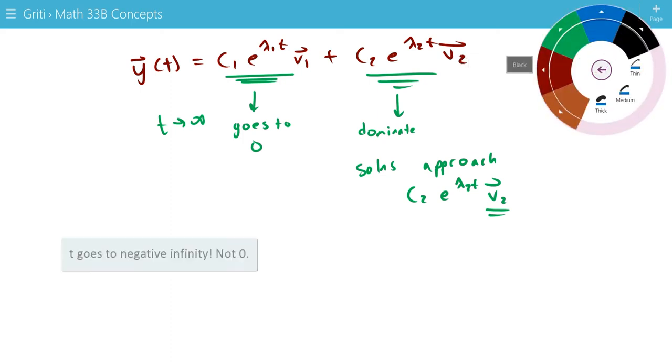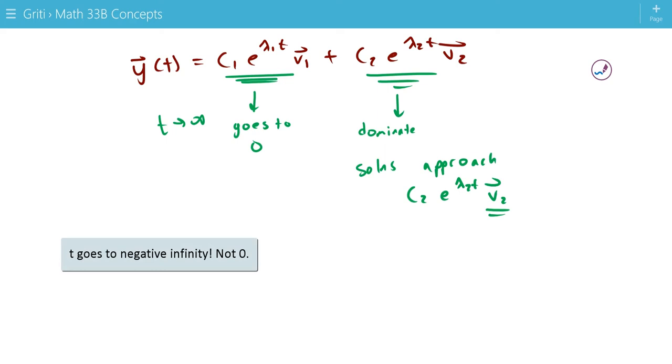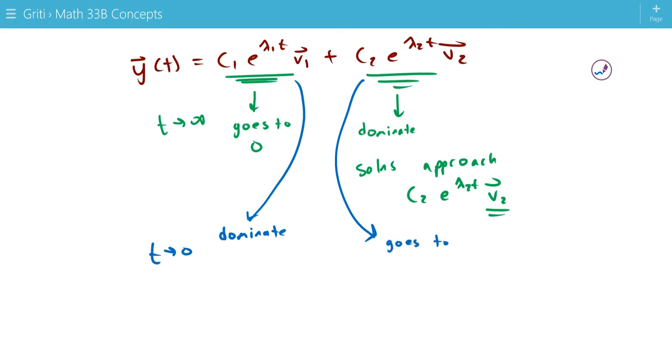Then we can consider the other case, where t goes to negative infinity. When t goes to negative infinity, this part, since it's a negative exponential, this will dominate. It will get larger and larger as we get to smaller values, and this will actually go to 0. As we go backwards in time, solutions come from a scalar multiple C1 e^(lambda1 t) V1.